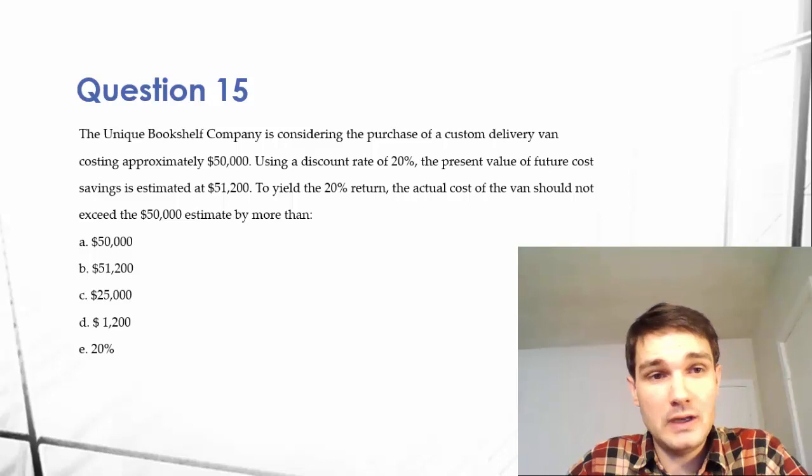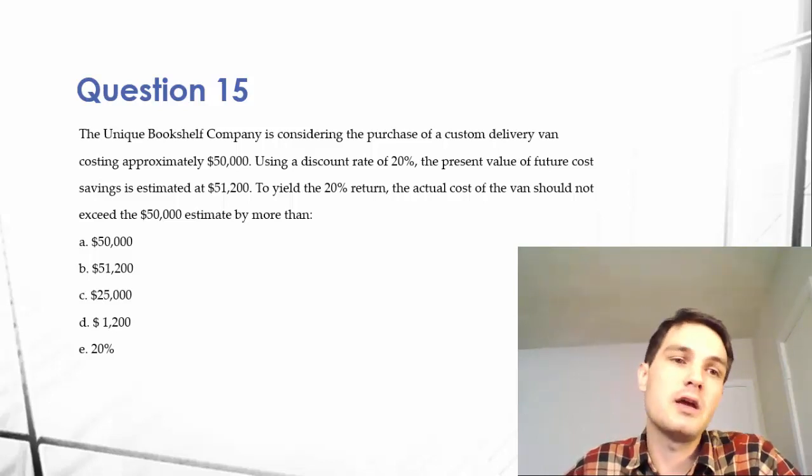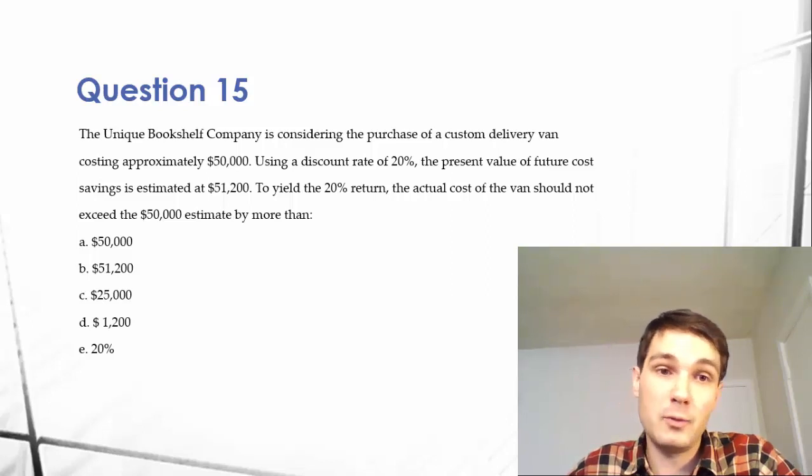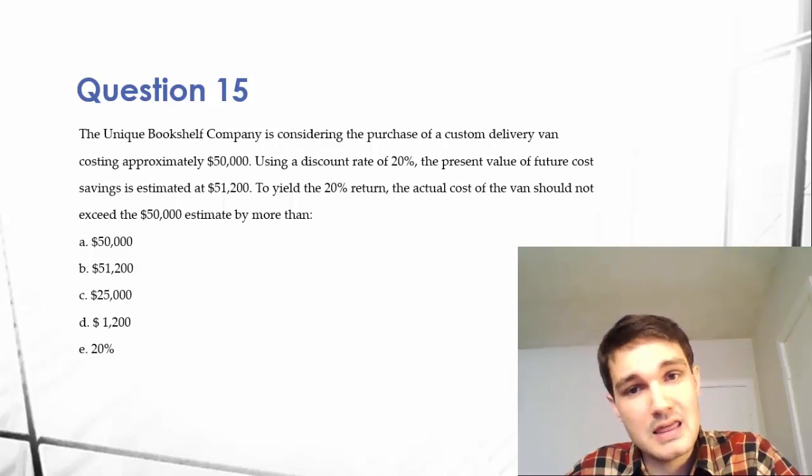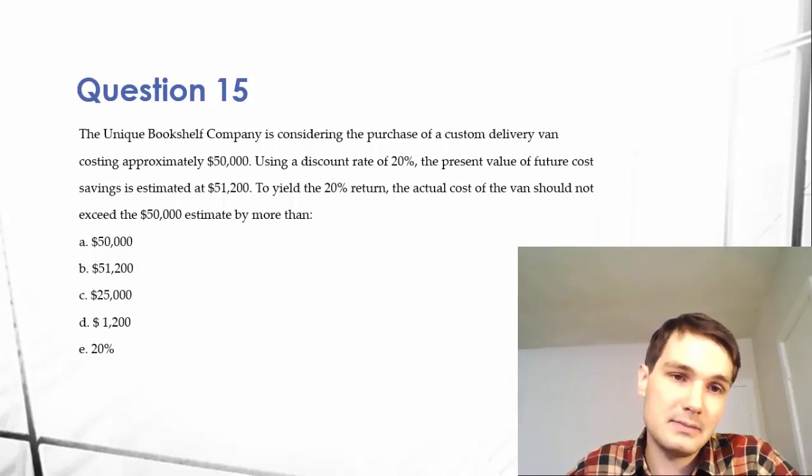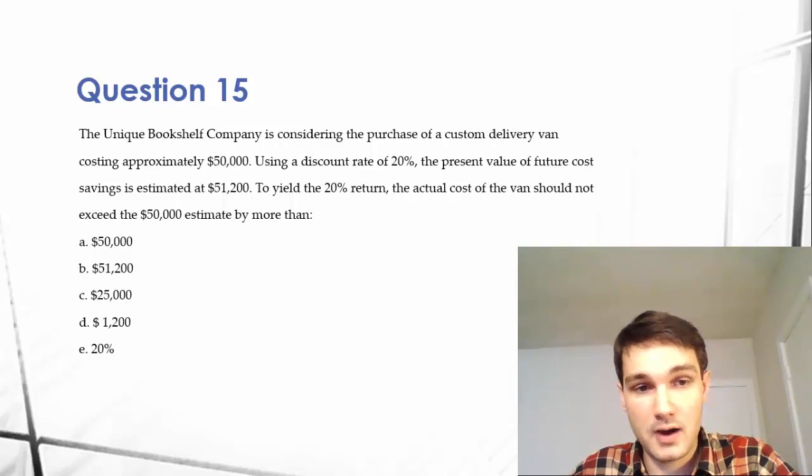The question reads, the unique bookshelf company is considering the purchase of a custom delivery van costing approximately $50,000. Using a discount rate of 20%, the present value of future cost savings is estimated at $51,200. To yield the 20% return, the actual cost of the van should not exceed the $50,000 estimate by more than, and then a series of answers: $50,000, $51,200, $25,000, $1,200.